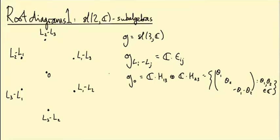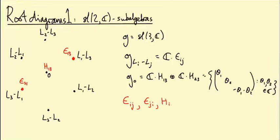There was this nice thing: if we pick one of these nonzero weights occurring in the root diagram and pick the opposite weight, these weight spaces are one dimensional so we can pick spanning vectors, say E13 and E31. We take the commutator bracket and get H13 in the zero weight space. Together, those three elements generate an sl2C subalgebra of sl3C. So E_{ij}, E_{ji}, and H_{ij} span an sl2C subalgebra.